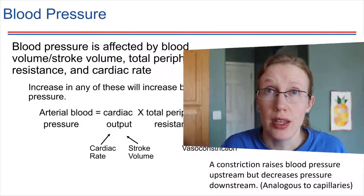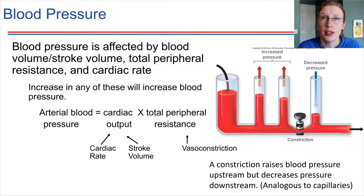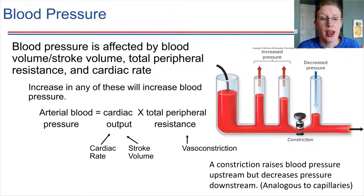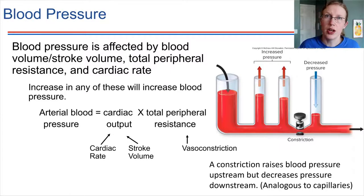And finally, blood pressure. What is it that influences blood pressure, and why does it matter? Blood pressure is influenced primarily by two things: the cardiac output — you can see in the first video, that's where we talked about cardiac output in this chapter — and also the total peripheral resistance that exists all throughout the blood vessels of the body.